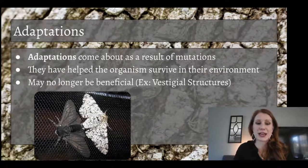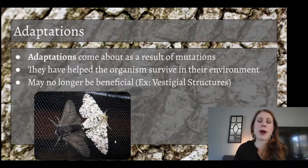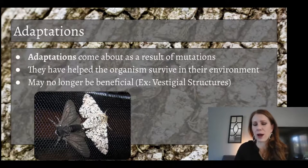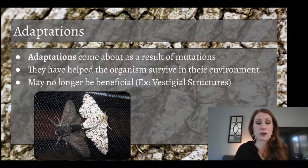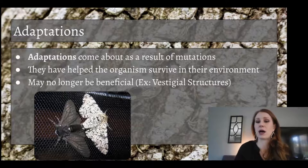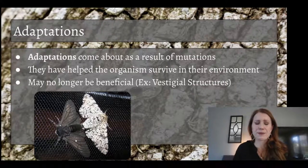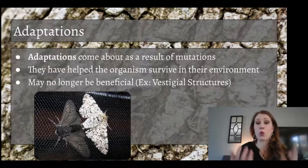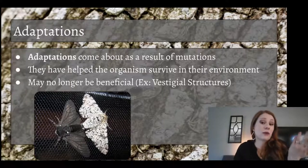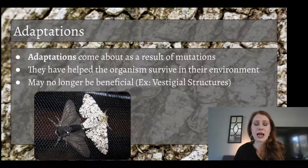One example of adaptations as a result of mutation would be the peppered moth. The white speckled moth is the original. A mutation produces a black or ebony color — it shimmers, but it's black. These peppered moths lived on the trunks of trees that were white. So for a long time, that mutated version died out. It wasn't a helpful adaptation — it caused them to die.